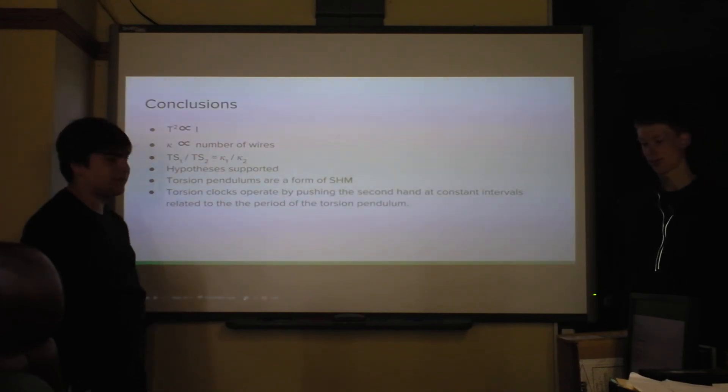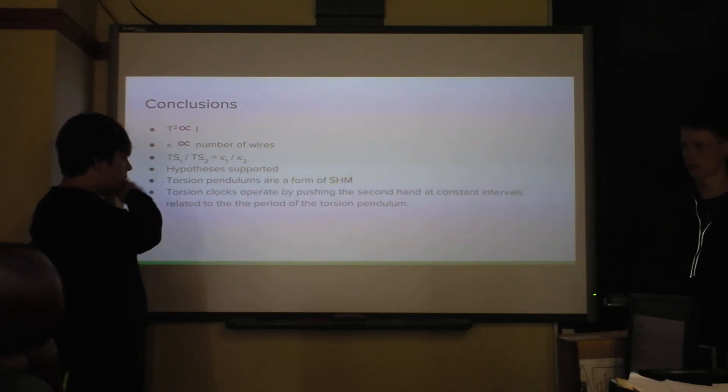So our conclusions were, from our graphs and from the equation, that the period squared of a torsion pendulum is directly proportional to its moment of inertia. And then that this isn't scientifically proven, but from our data it sort of suggests that the torsion constant is proportional to the number of wires you have. And also this is sort of another one of our conclusions that's not really necessarily scientifically proven, but that the ratio of the tensile strength will be the same as the ratio of the torsion constants of two wires. This is part of our hypothesis. And then we also proved that torsion pendulums were a form of simple harmonic motion and that torsion clocks operate by pushing the second hand at constant intervals related to the period of the torsion pendulum.